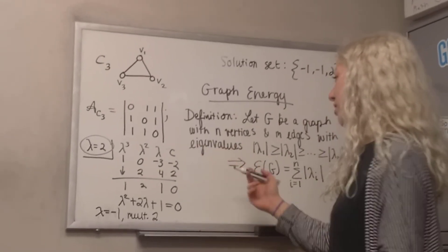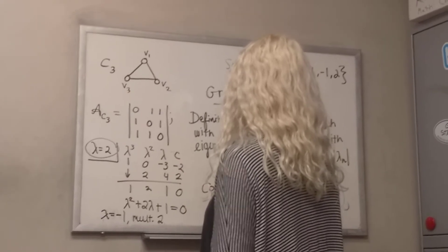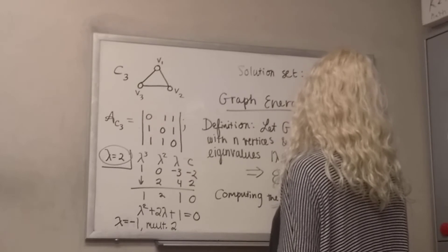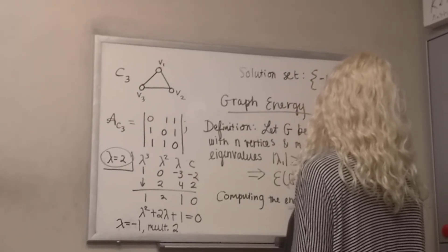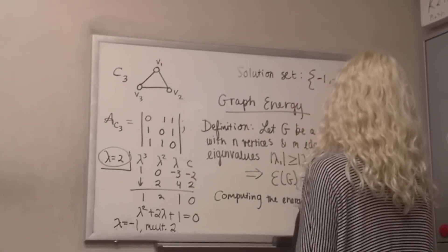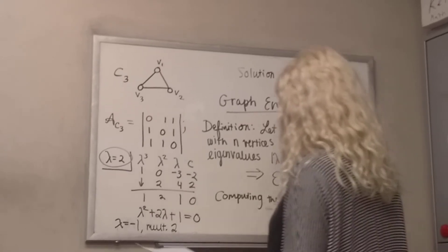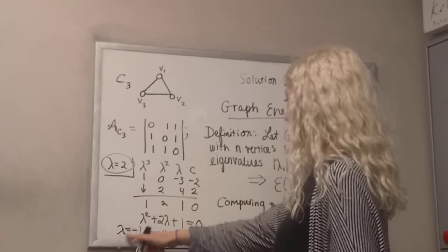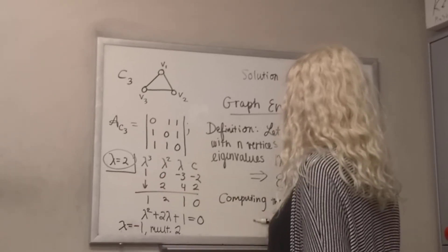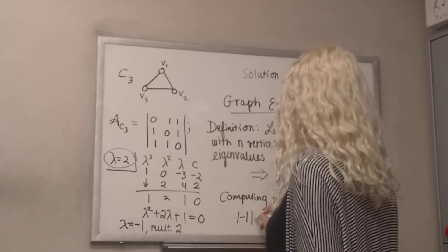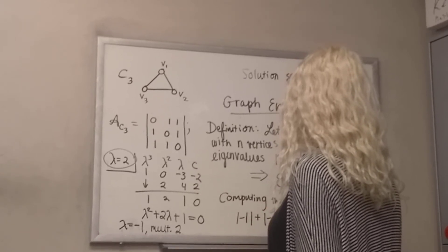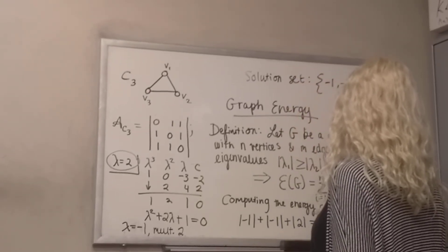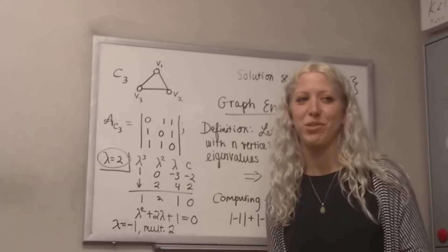So when we compute the energy of our example graph — what were our roots? We had negative one with a multiplicity of two and lambda equal to two. So the energy of the cycle graph on three vertices is four.